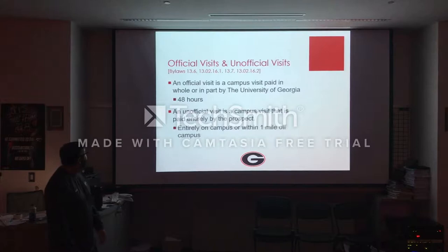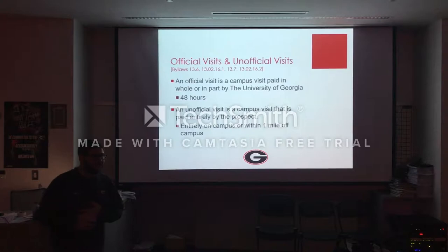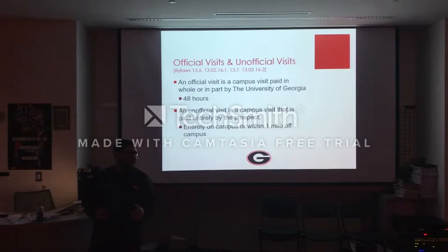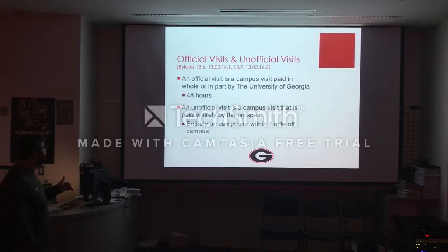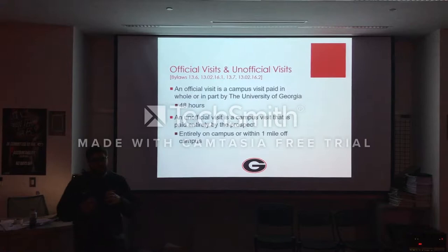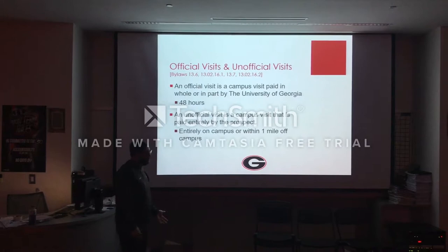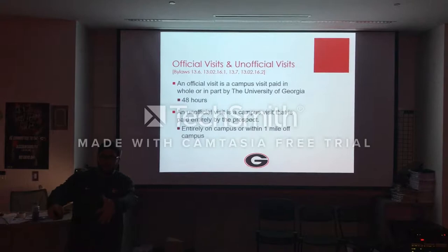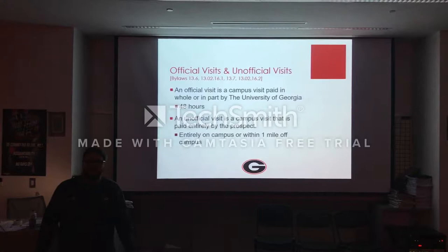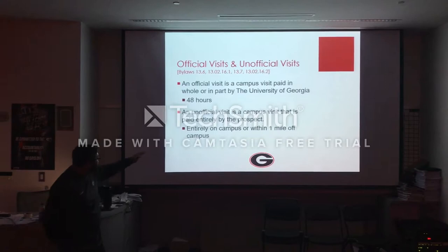Official and unofficial visits — this is where you guys are really going to come up big for us, because ultimately it's about having a genuine, authentic presentation in everything we do. An official visit is a campus visit paid in whole or in part by the University of Georgia — it can only be 48 hours, so from the moment they step foot on campus, the clock starts. An unofficial visit is a campus visit paid entirely by the prospect. When they come on unofficial visits, we have to charge them whatever it costs — like for a meal, I think it's about $10. It must take place on campus or within one mile off campus.